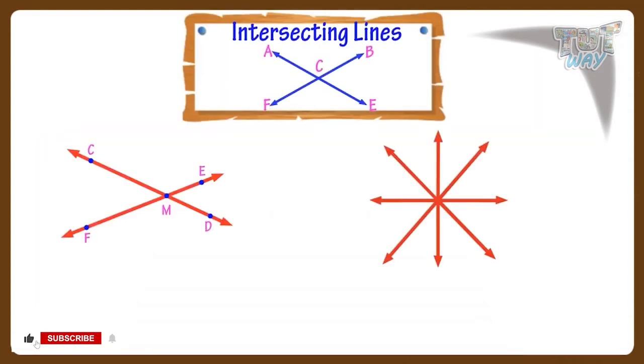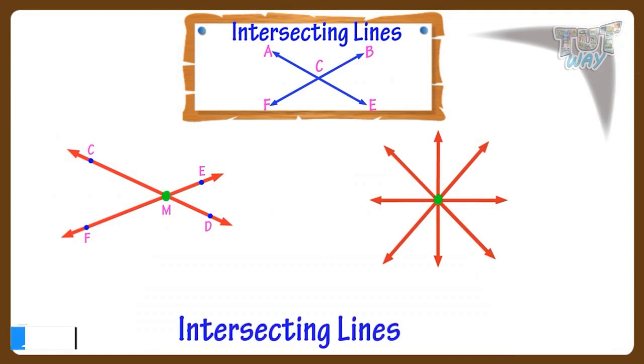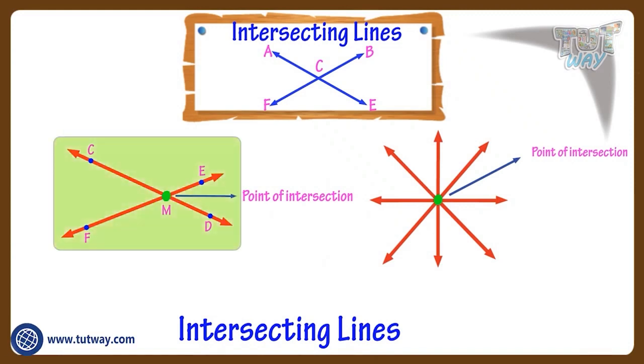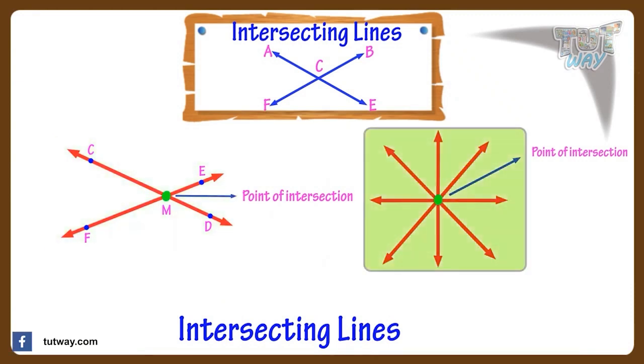Two or more lines that meet at a point are called intersecting lines, and the point at which the lines meet is called the point of intersection. Here this is the point of intersection of these two lines, and here this is the point of intersection of all these lines.